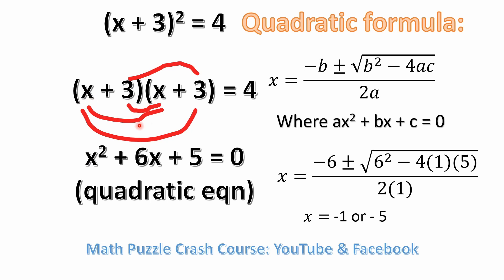3x plus 3x gives you 6x. And then you've got plus 5 here. Or I'm sorry, you have 3 times 3 is 9, which would give you 9.